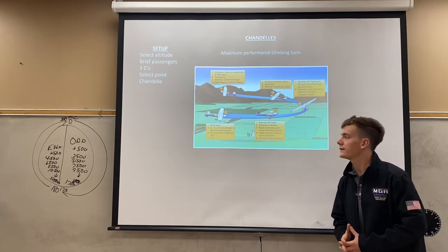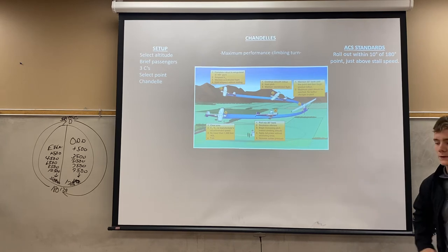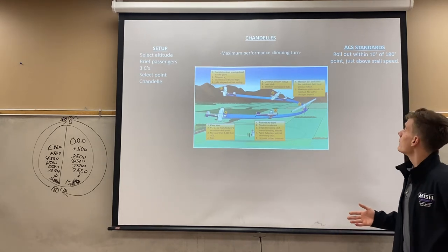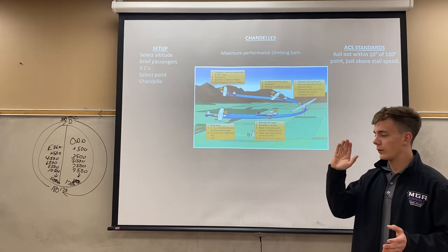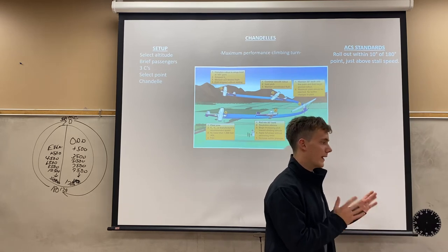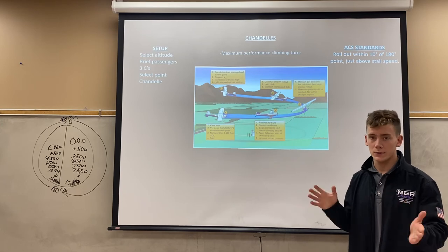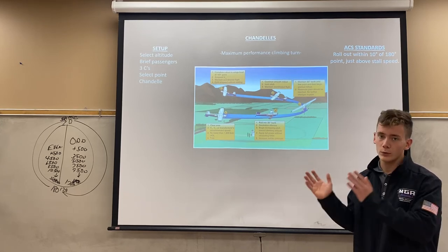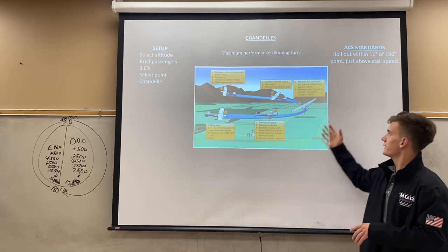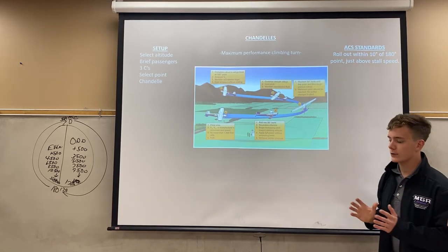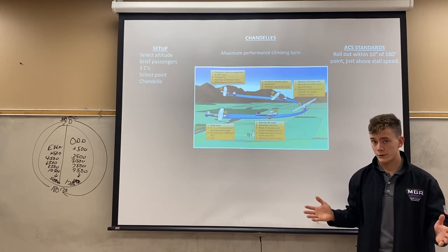What are the standards from the ACS? Really the most important one, and probably the only one with a numerical value, is to roll out within 10 degrees of the desired heading. If we were on a heading of north and wanted to turn to 180 degrees, we need to roll out within 10 degrees of 180 — so between 170 and 190. And you should be just above stall speed, so the stall horn should be going off.